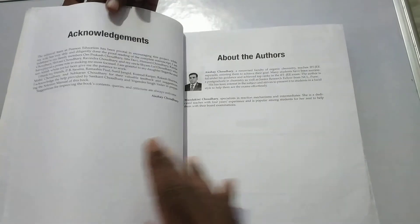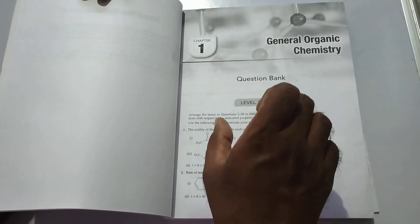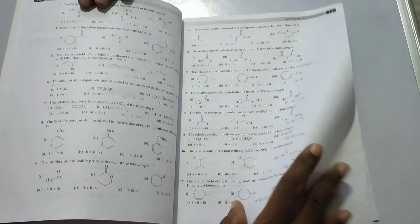First of all, we are going to see the general organic chemistry. Level of question is given based on the knowledge of each and every chapter. How many questions are present? The level of question contains 94 questions. Now we are going to see level 2. It contains 128 questions in chapter 2.